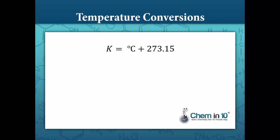To convert from Celsius to Kelvin, Kelvin is equal to degrees Celsius plus 273.15. So to convert, you just add 273.15. Some people just add 273 — that's fine as well.